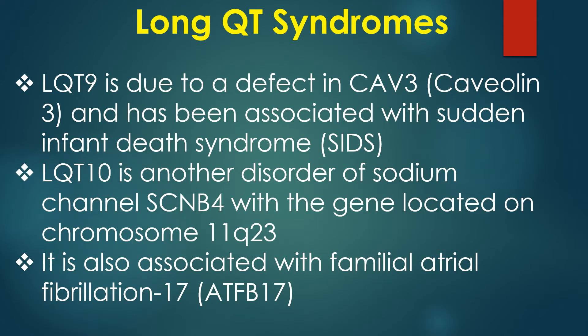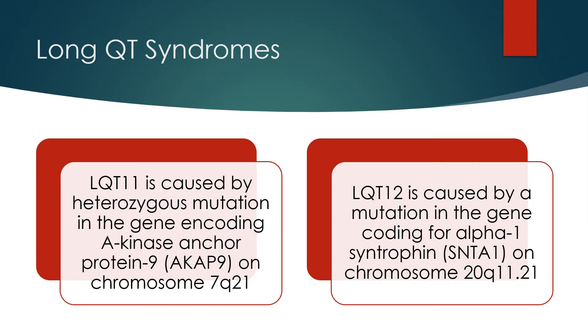LQT9 is due to a defect in caveolin-3 and has been associated with sudden infant death syndrome. LQT10 is another disorder of the sodium channel beta-4 subunit (SCN4B), with the gene located on chromosome 11, and is also associated with familial atrial fibrillation. LQT11 is caused by a heterozygous mutation in the gene encoding A-kinase anchoring protein 9 on chromosome 7, and LQT12 is caused by a mutation in the gene encoding alpha-1-syntrophin on chromosome 20.